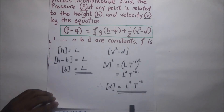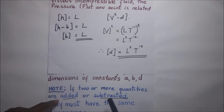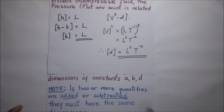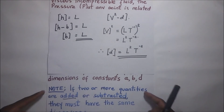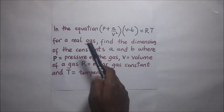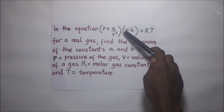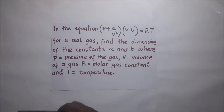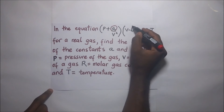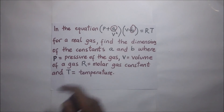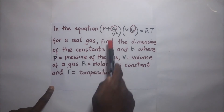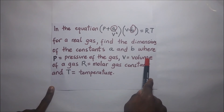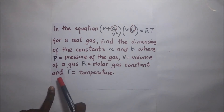This all comes from the fundamental fact that if two or more quantities are added or subtracted, they must have the same dimensions. We will do one more example. The equation is P plus A over V squared, times V minus B, equals RT — this is the equation for a real gas. Find the dimensions of the constants A and B, where P is the pressure of the gas, V is the volume of the gas, R is the molar gas constant, and T is the temperature.